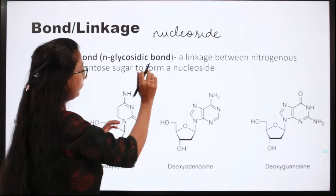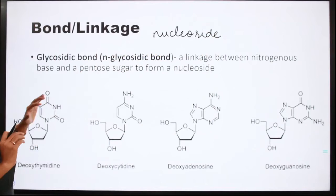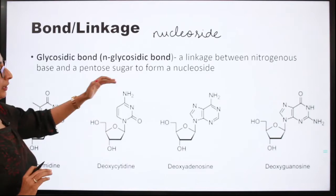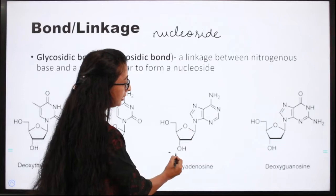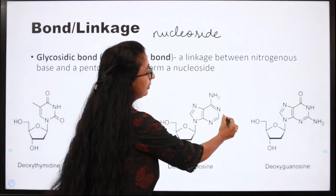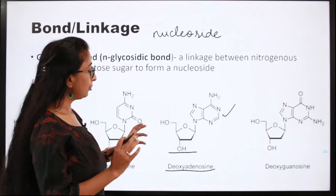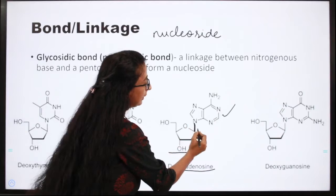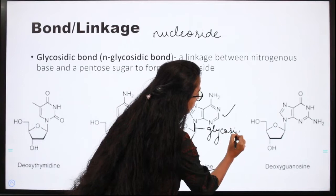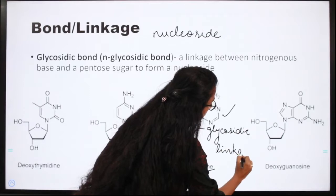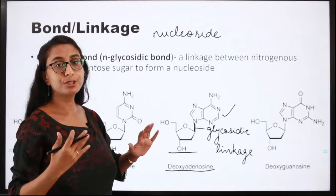Pentosugar and nitrogenous base together give rise to a nucleoside. When the nitrogenous base is adenine, the deoxyribose sugar molecule attached with adenine forms the nucleoside called deoxyadenosine. So deoxyadenosine equals deoxyribose sugar plus adenine, linked together by a glycosidic linkage.